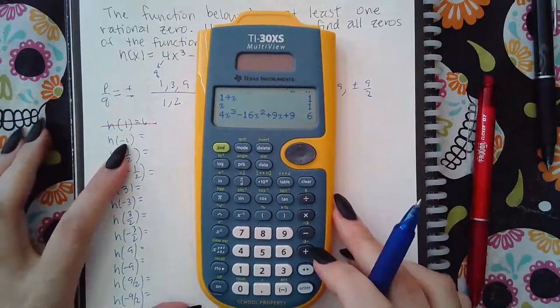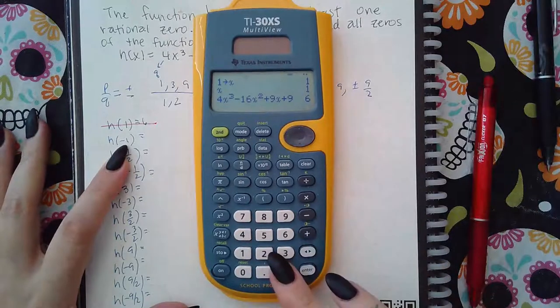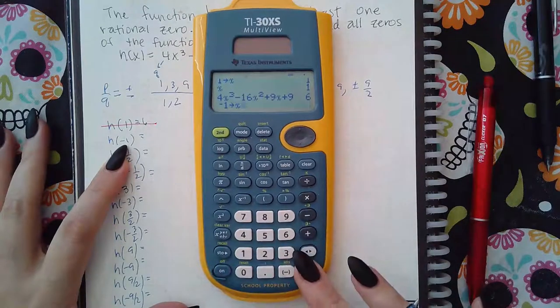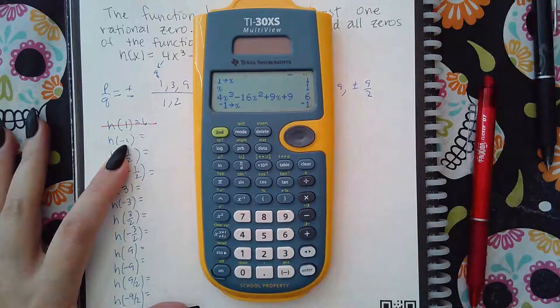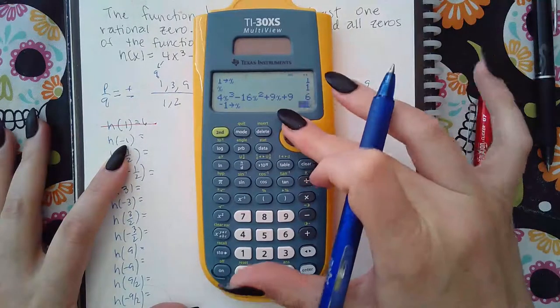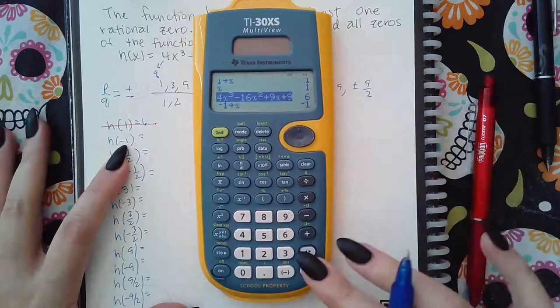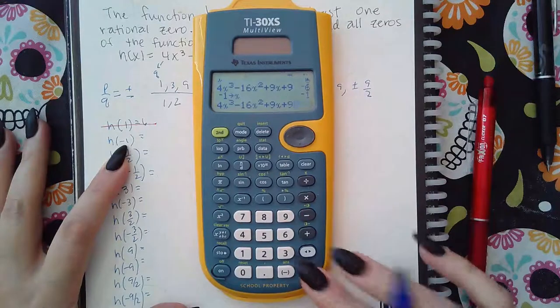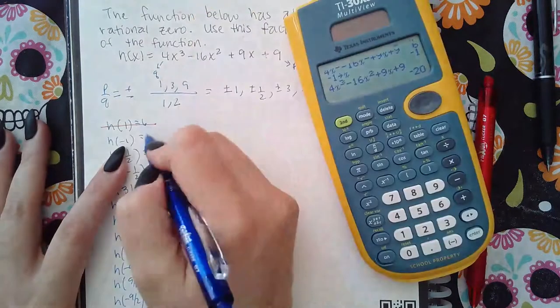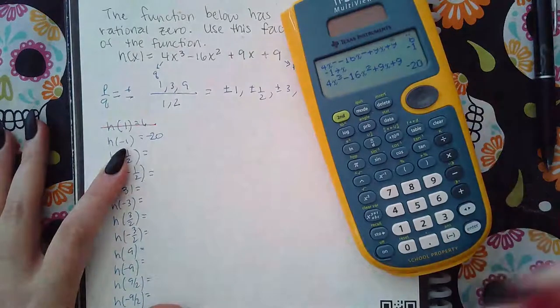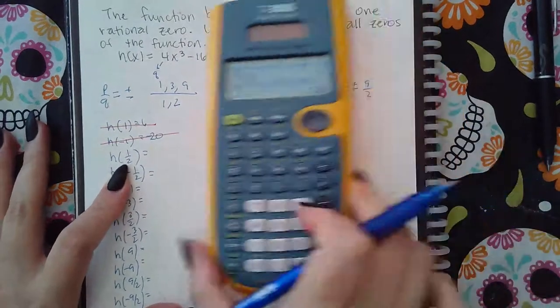Now how do I get the next one? Then you do negative 1, store X, hit enter. So now X is negative 1. So all you have to do is go back up to here, hit enter to copy it, and then hit enter again, and it will automatically plug in negative 1. So I get negative 20. That's also not zero. Not going to work. Try one half.